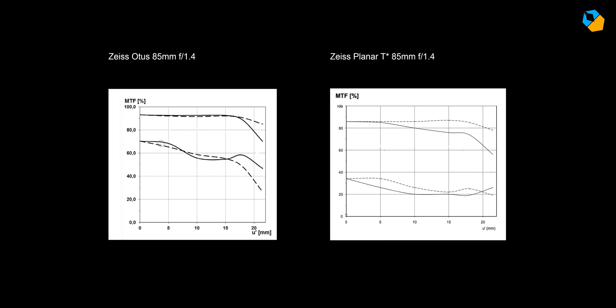I also said MTF charts can tell us about bokeh. Isn't bokeh supposed to be subjective? Yes, but the graph can tell us a lot. If the dotted lines are close to the solid lines, the bokeh is more uniform and will blend in better when out of focus. Obviously, the ideal bokeh is if both lines meet.